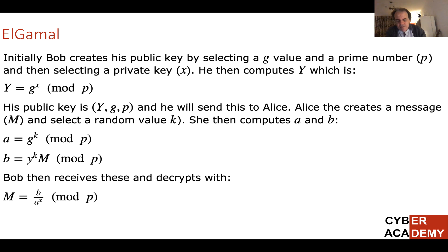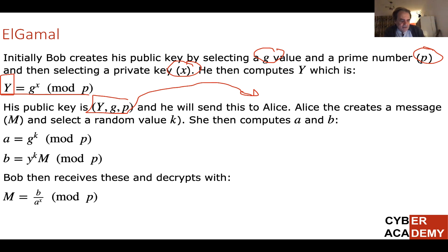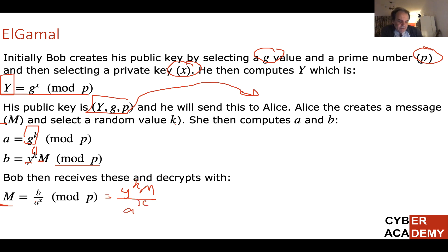To summarize the full algorithm: Bob selects a generator G, a prime number P, and a private key X. Y is computed as G to the power of X mod P, and the public key (P, Y, G) is sent to Alice. Alice creates a message and a random value K, then computes A = G to the power of K mod P, and B = Y to the power of K times the message, mod P. Bob receives A and B, and works out the message as B over A to the power of X mod P.